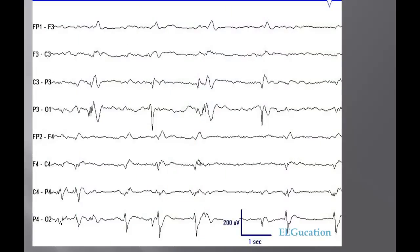What about this one? You do not see any eye blinks, you see these sharp transients in the occipital head region. When there is a downward deflection, it has two meanings, either P3 is more positive than O1 or O1 is more negative than P3.